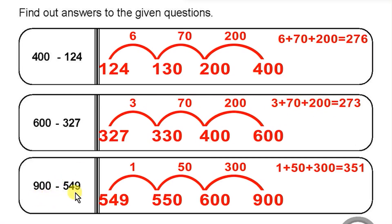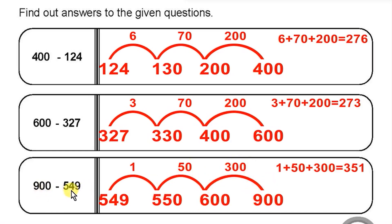900 minus 549: 549 is not a round figure. 549 plus 1 is 550, plus 50 is 600, plus 300 is 900. So 900 minus 549 equals 351.